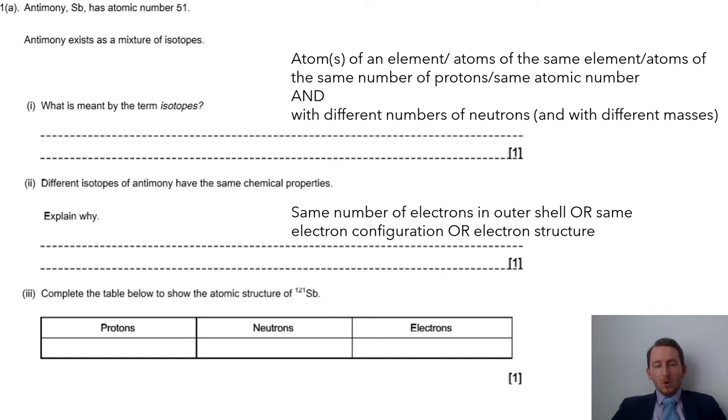We then have a table to complete: protons, neutrons, electrons. These questions do come up. And you'd be surprised, the number of times that I've seen people who focus on the complicated stuff, but then they ignore the simple stuff, something like this, and they make some silly mistakes. It's a little bit soul-destroying when you see those marks being lost.